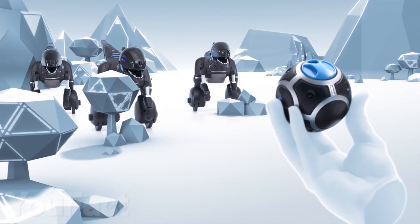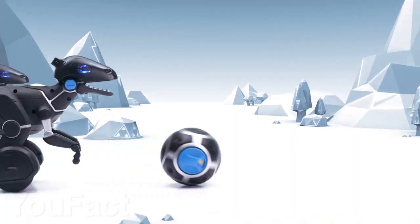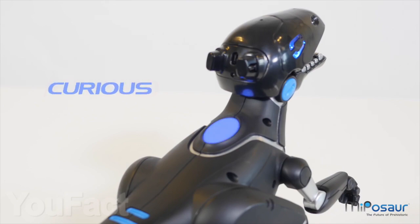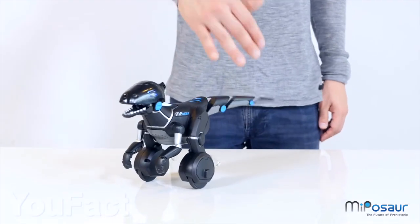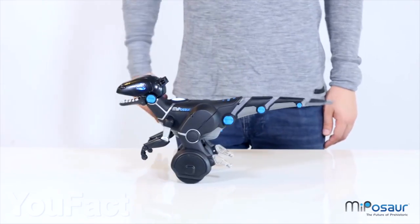Miposaur, an intellectual dino robot with a unique two-wheel balancing technology. This dinosaur has different moods. It can be annoyed, excited, and curious. Depending on its mood, its reaction to different games will also be different.